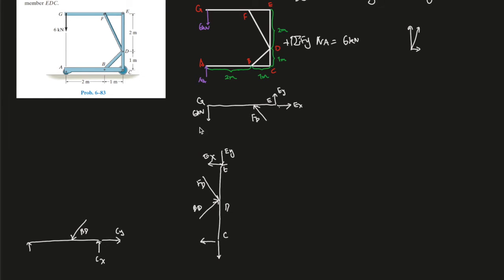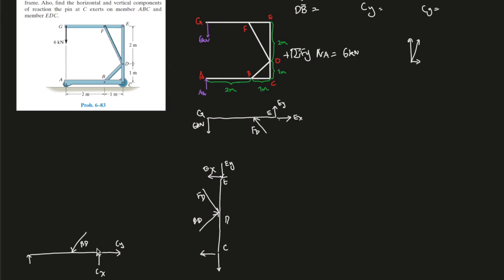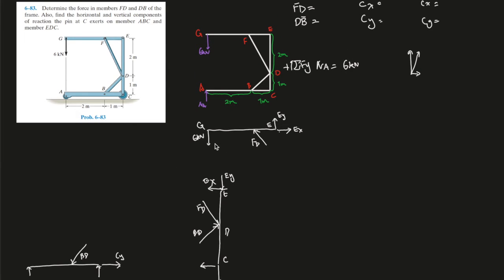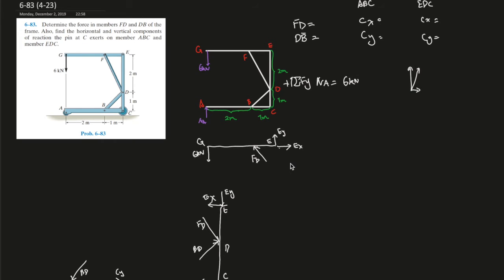Now I think we've got all the forces figured out, and they all seem to be going in the right direction. We're really lucky — if we miss one, we have to go back and change everything. So let's start our calculations. First, we'll try to use the one that already has a given force — 6 kilonewtons. So let's find the sum of the moments at E to get rid of the most unknowns and set it equal to zero.